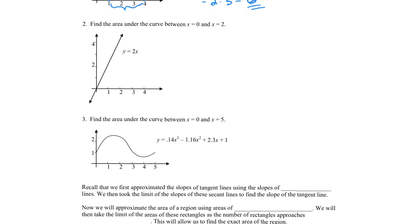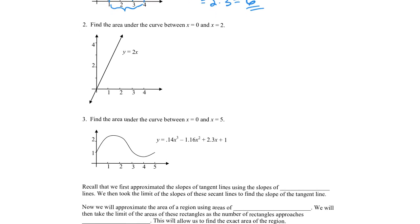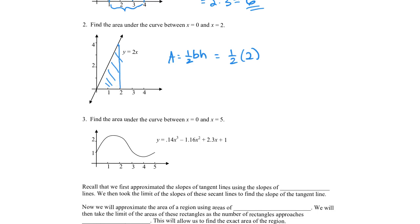The next one is not quite as easy but still not too bad. If you want to find the area under this curve between x equals 0 and x equals 2, we've got a triangle. The area of a triangle is one-half base times height. The base along here is 2 and the height is 4, so we end up with 4 square units.